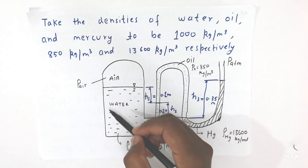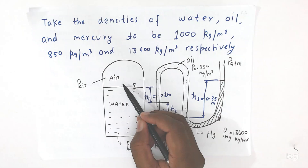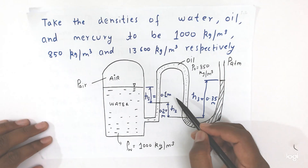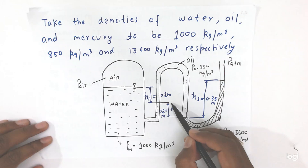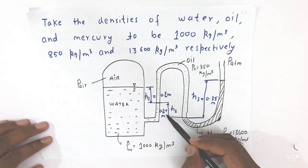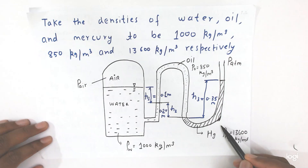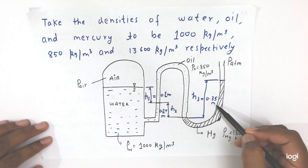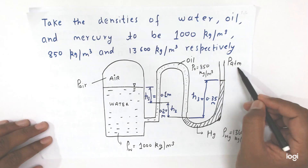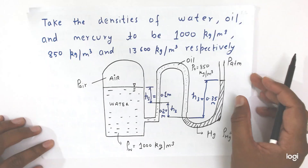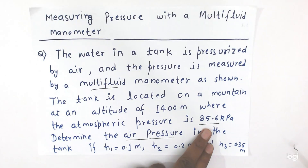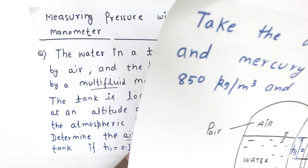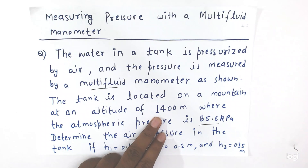So this is the arrangement: here is the tank, air is giving pressure here, this is the water up to h1 = 0.1 meter, and this is the oil filled from here to here with height h2 = 0.2 meter, and this is the mercury with height h3 = 0.35 meter. This end is open to atmosphere, so atmospheric pressure equal to 85.6 kilo Pascal is working here because this whole setup is fixed at 1400 meters altitude.